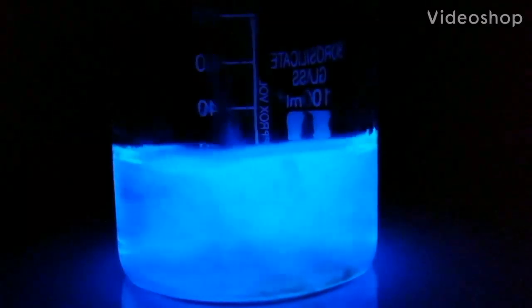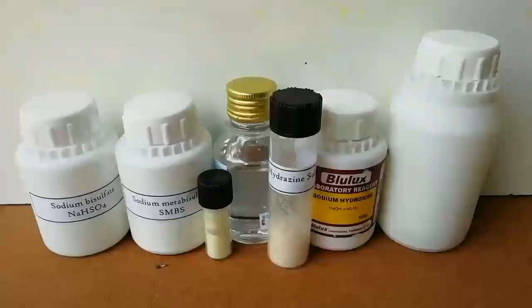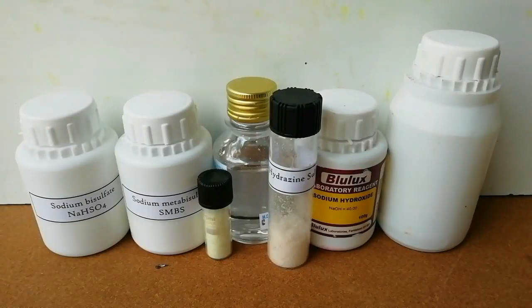In this video we are going to make luminol using 3-nitrophthalic acid, hydrazine sulfate, and sodium acetate dihydrate. In previous videos I showed you how to make hydrazine sulfate and 3-nitrophthalic acid. Here we are going to convert it to luminol.